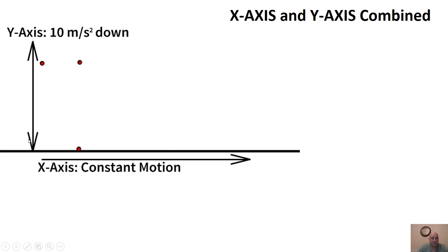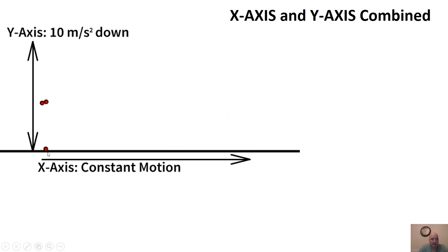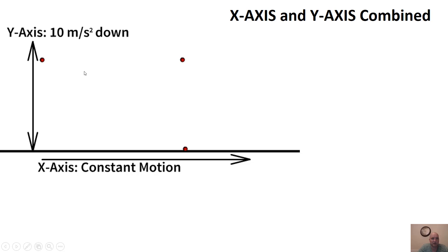If you combine the motion, the Y axis is being accelerated by gravity while the X axis is in constant motion. If you follow the two together, you get the actual parabolic path. That center ball is what's really occurring, but both of the other motions are occurring, causing that curved parabolic path.